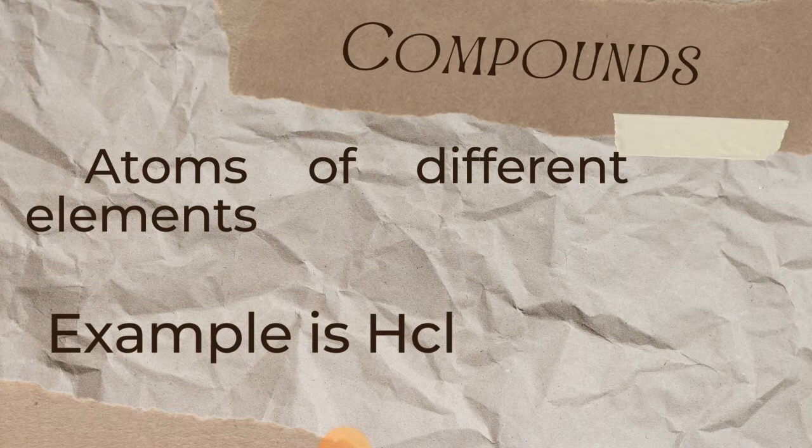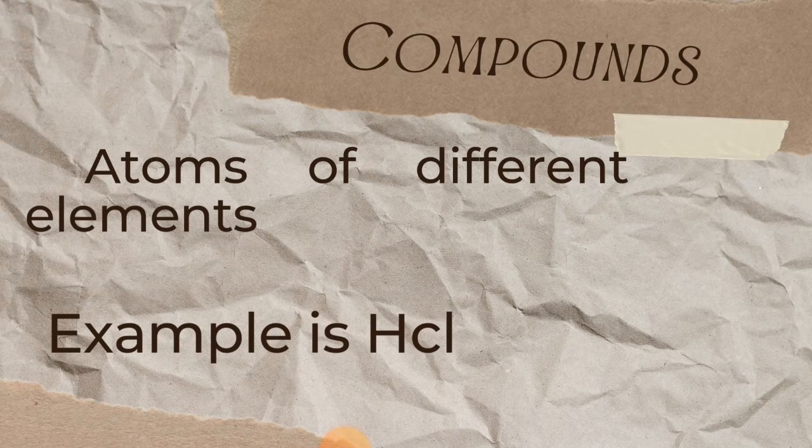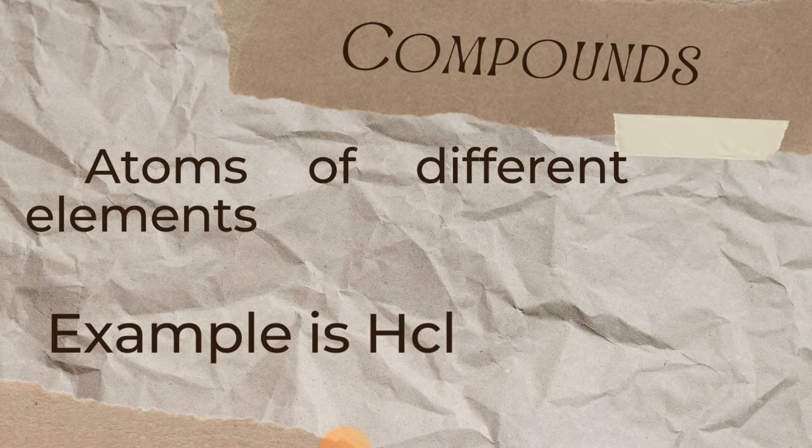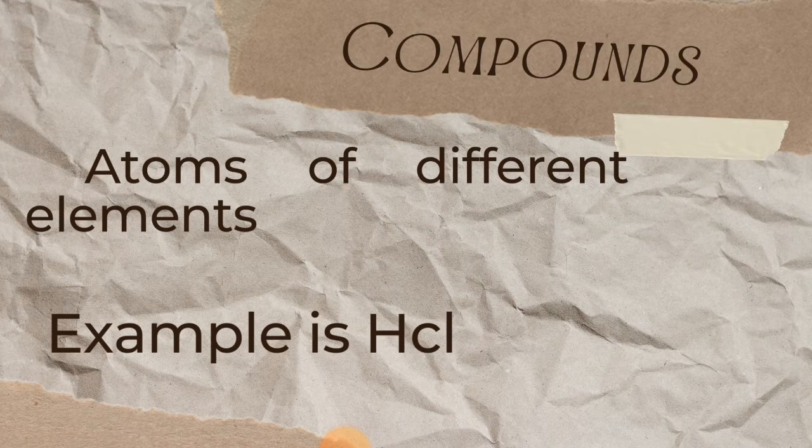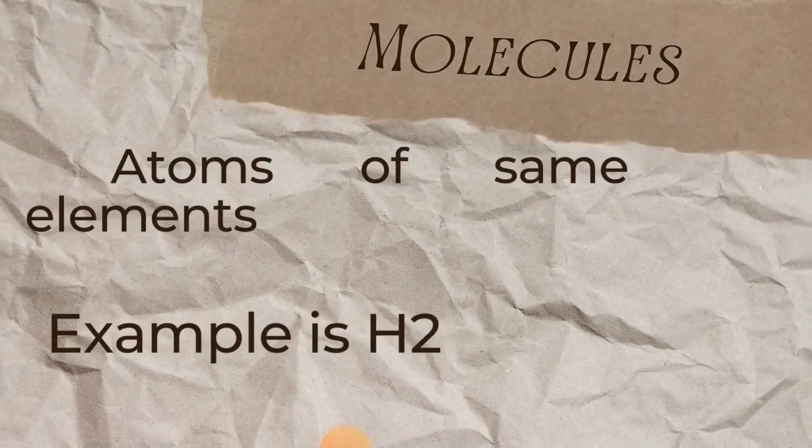Combination of atoms of different elements is like, how do I put it? Like in a marriage setting, a brother marries a sister from another family, from a compound, another family. But if a brother marries a sister from the same family, then you form a molecule. So an example of a compound here is hydrochloric acid, formed from hydrogen and chlorine.